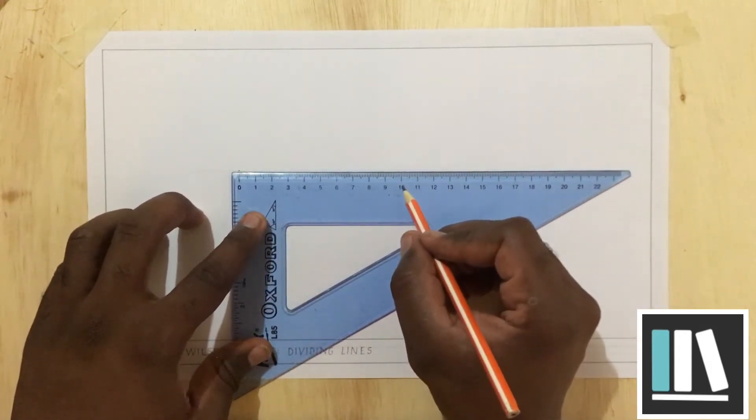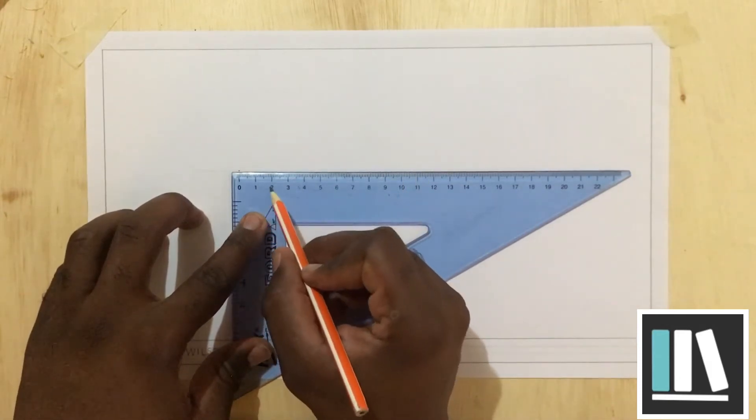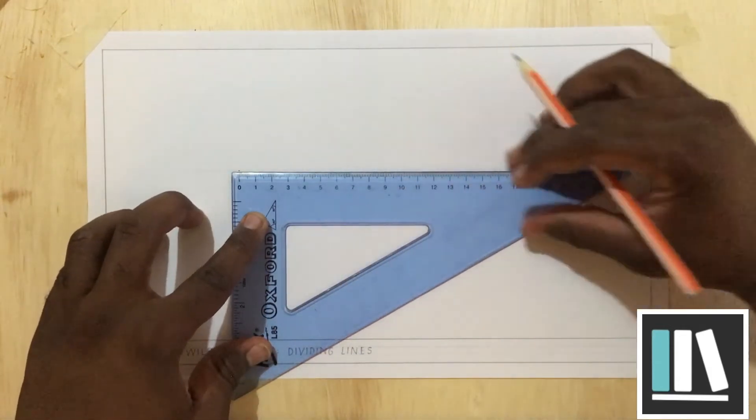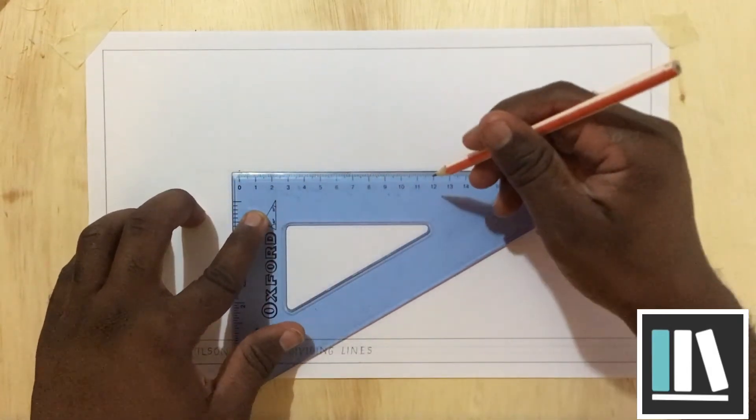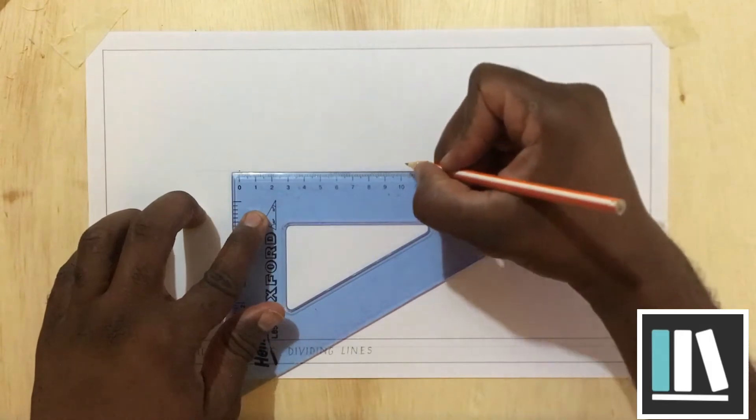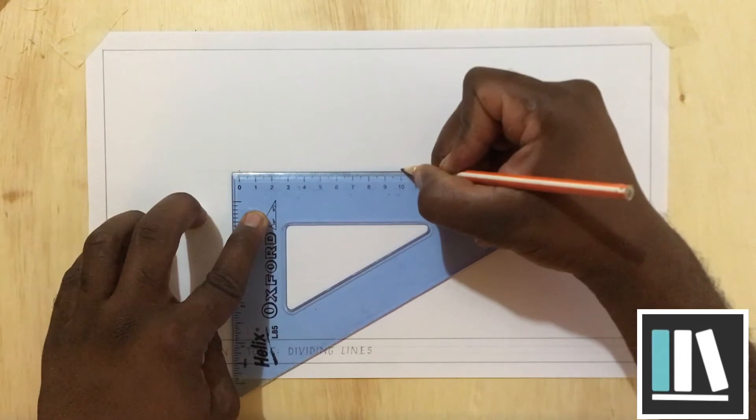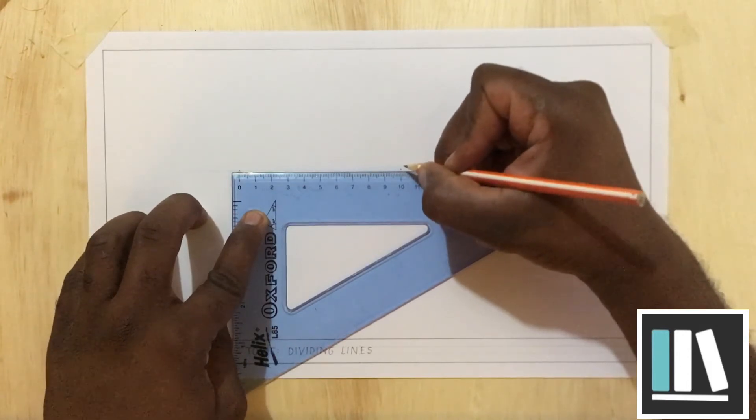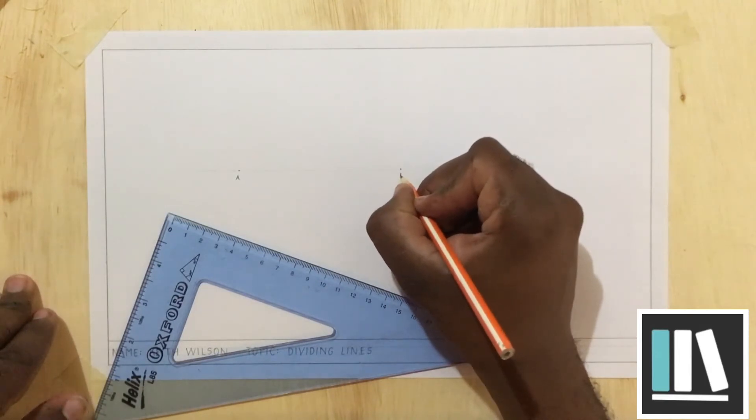Now here is 10 centimeters or 100 millimeters: 10, 20, 30, 40, 50, 60, 70, 80, 90, 100. Now ensure that the set square is also in line with the construction line that you drew before. At exactly the 10 centimeter mark or the 100 millimeter mark, you are going to place the dot, the second dot for the line. Now, this point will be called point B.